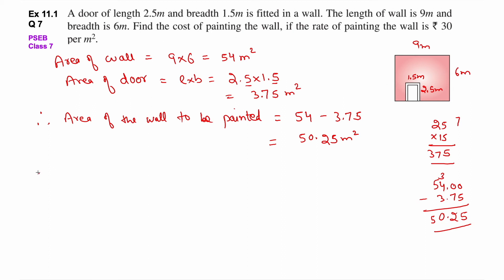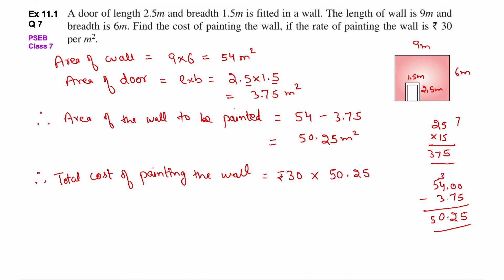Paint करने की cost है 30 rupees per square meter. Therefore, total cost of painting the wall = 30 × 50.25. 3 को 5025 के साथ multiply करो: 3×5=15 carry 1, 3×2=6+1=7, 3×0=0, 3×5=15 — आया 15075. Decimal के बाद 2 digits हैं, so decimal लगाओ — Rs. 1507.50 is the answer.